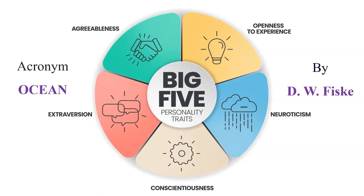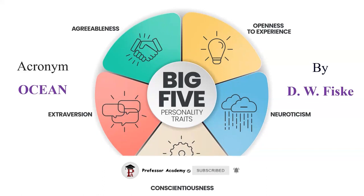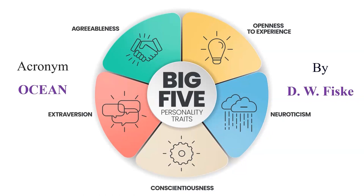The Big Five personality traits were given by D.W. Fiske. The acronym used is OCEAN: O stands for openness to experience, C for conscientiousness, E for extraversion, A for agreeableness, and N for neuroticism, which refers to emotional stability.